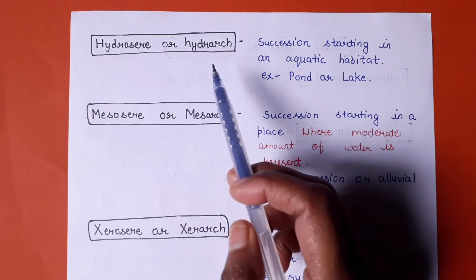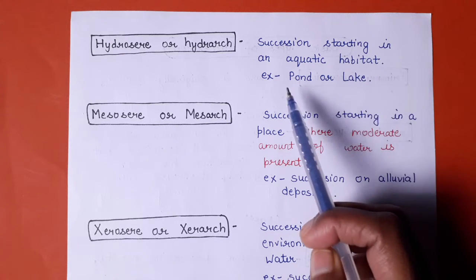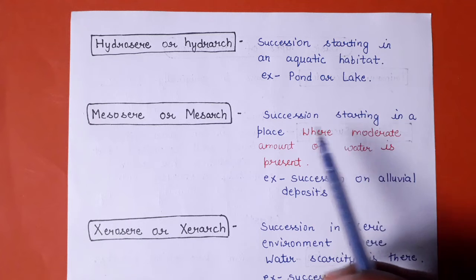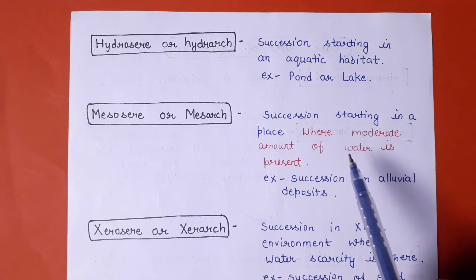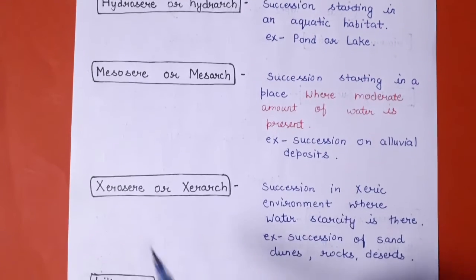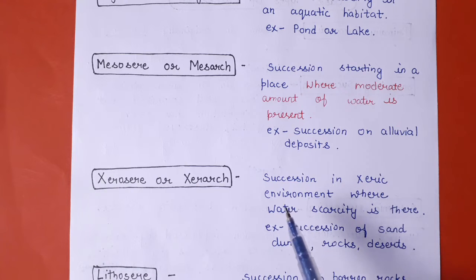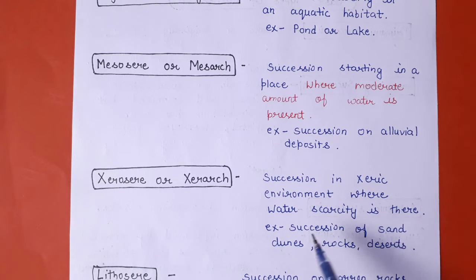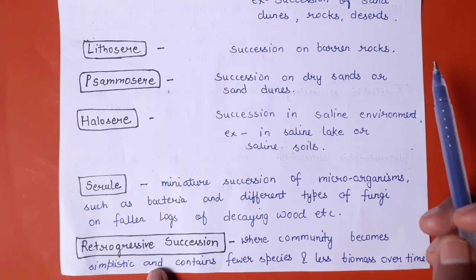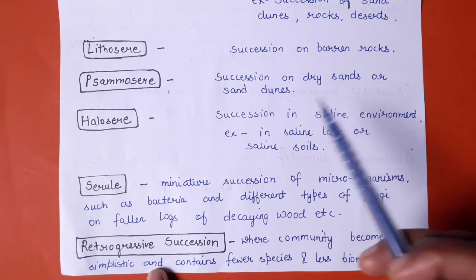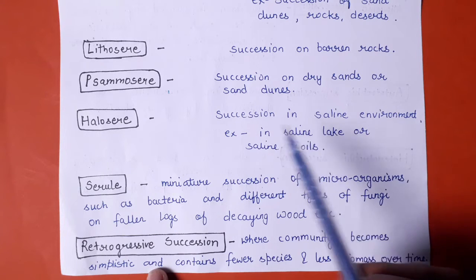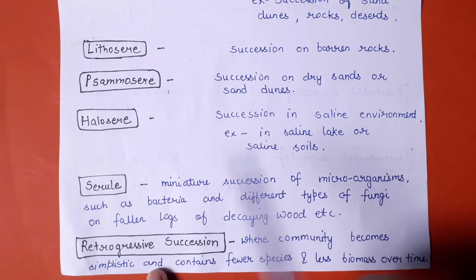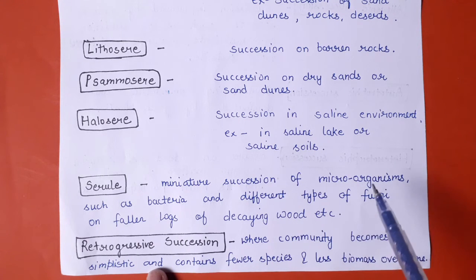Hydrosere or hydrarch involves succession of aquatic habitats like ponds or lakes. Mesosere or mesarch is succession starting within a place where a moderate amount of water is present. Xerosere or xerarch is succession taking place in a xeric environment where water scarcity exists — examples include succession of sand dunes, rocks, or deserts. Lithosere involves succession of barren rocks. Psammosere involves succession on dry sands or sand dunes. Halosere involves succession in a saline environment like saline lakes or saline soil. Serulle is a miniature succession of microorganisms like bacteria and fungi growing on decaying wood.